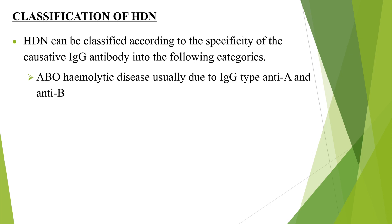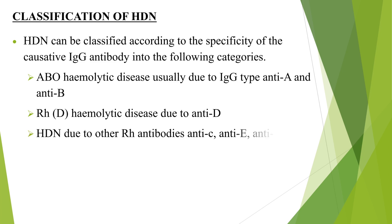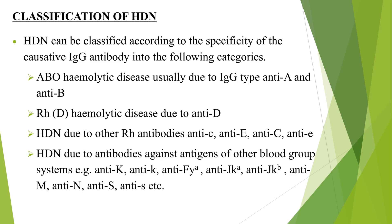Rh-D hemolytic disease due to anti-D. HDN due to other Rh antibodies: anti-c, anti-e, anti-C, anti-d. HDN due to antibodies against antigens of other blood group systems, for example anti-K, anti-k, anti-Fya, anti-Jka, anti-Jkb, anti-M, anti-N, anti-S, anti-s, etc.